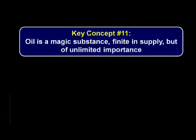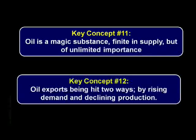Key concept number eleven: oil is a magical substance of finite supply but unlimited importance. This cannot be overstated. Transitioning from one fuel source to another is a devilishly expensive proposition, posing enormous challenges with respect to cost, scale, and time. Our species transitioned over many years from wood to coal because coal was a better fuel source, and we transitioned over several decades from coal to oil for the same reason. Nobody has been able to advance any candidates as our next source of energy. Technology is not a source of energy — it may help us exploit our energy more efficiently, but it would be a big mistake to confuse technology with an energy source. Key concept number twelve: oil exports are being hit two ways, by rising demand and declining production, raising the prospect that the moment when the world's nations finally realize there's not enough oil may come much sooner than most suspect.